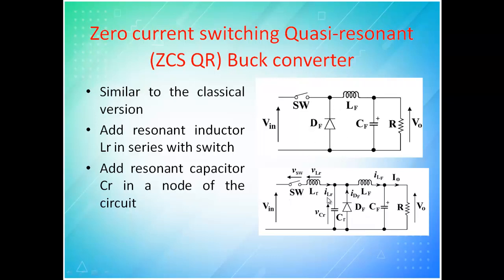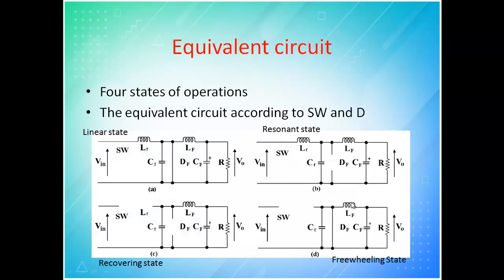In the quasi resonant buck converter, we add resonance components: a resonance inductor Lr in series with the switch, and a resonance capacitor Cr in parallel. The remaining part of the circuit is the same as a normal buck converter. The resonance inductor Lr is always in series and the resonance capacitor Cr is always in parallel.